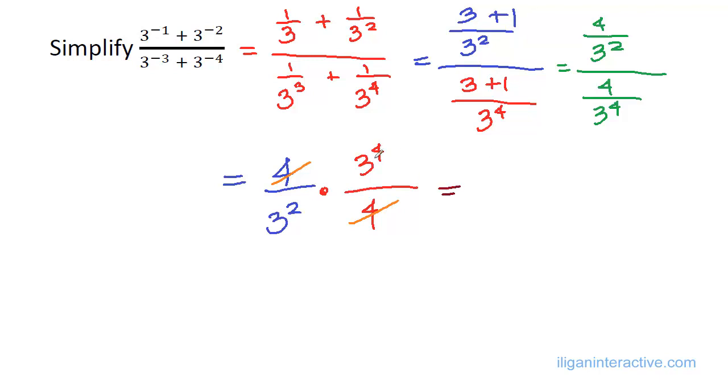We subtract the exponents, 4 minus 2 is 2, so it will be 3 squared, or of course this is just equal to 9. So this whole expression is just equivalent to, in simplified form, to 9.